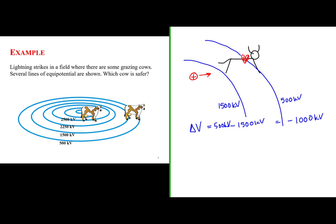That charge is going to move right across the cow's body, likely causing some damage to the heart because the heart depends on regular electrical stimulation. This is a burst of electrical stimulation — 1000 kilovolts of potential difference.